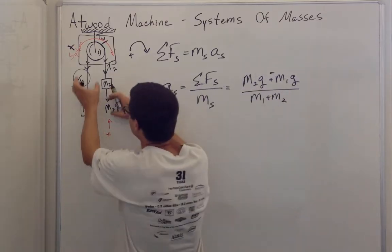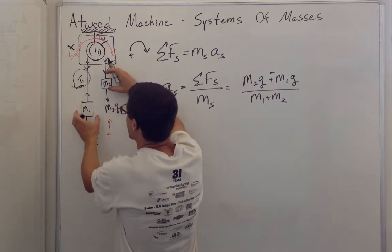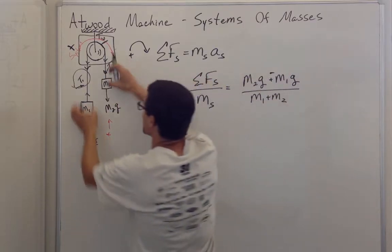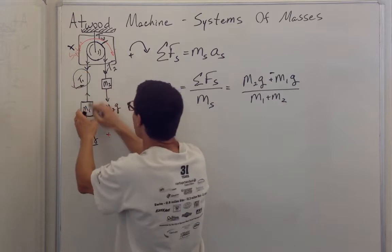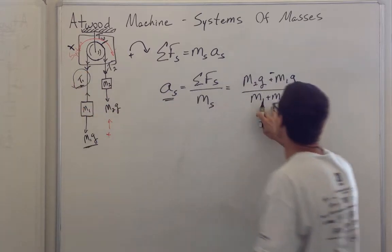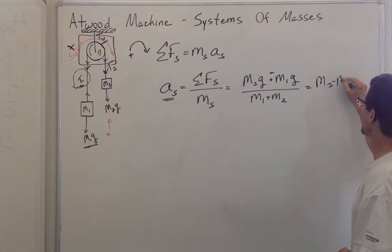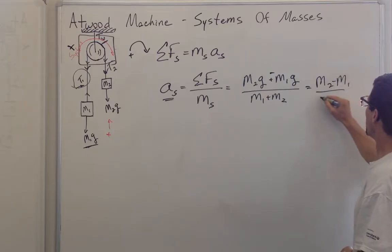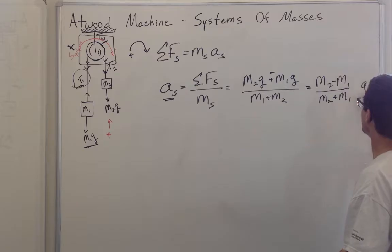So the difference in these two weights is the driving force that accelerates the system. But the mass that has to be accelerated is the sum, m2 minus m1 over m2 plus m1 times g.